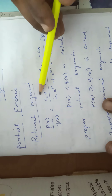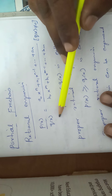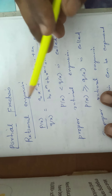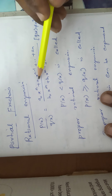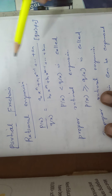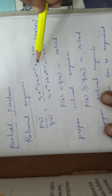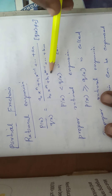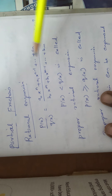The rational expression can be written as P(x) by Q(x), where P(x) is a polynomial: a₀xⁿ + a₁xⁿ⁻¹ + ... + aₙ. And Q(x) can be written as b₀xᵐ + b₁xᵐ⁻¹ + ... + bₘ.